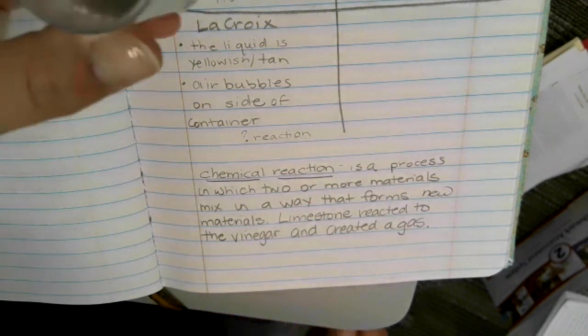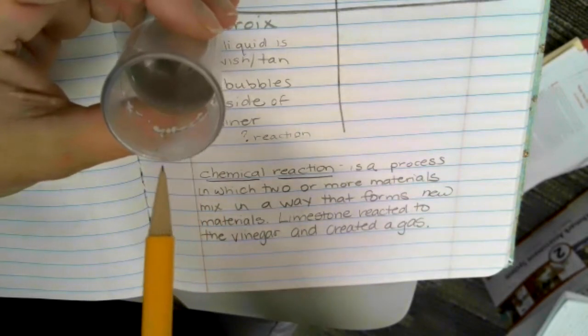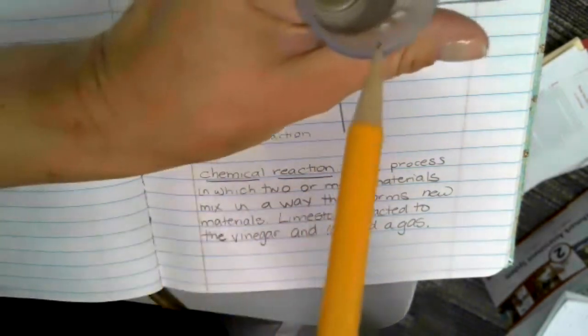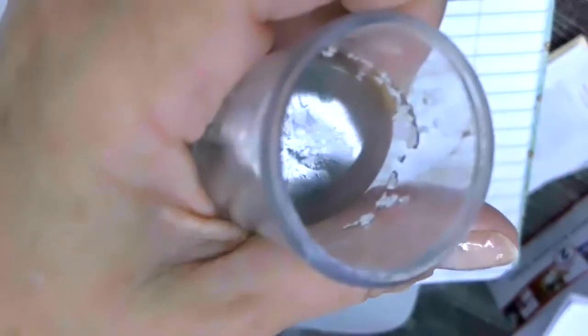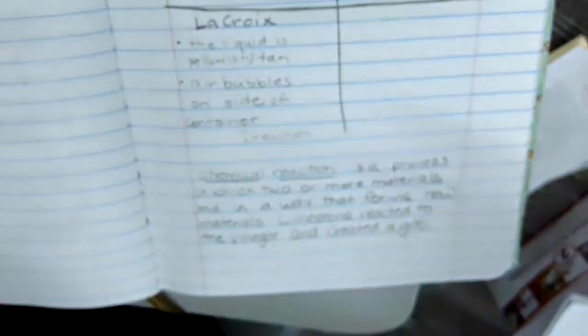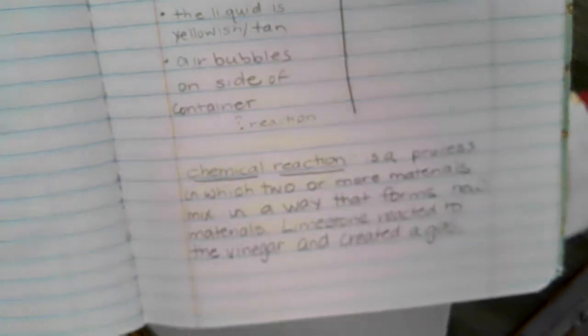The limestone also reacted to the vinegar and formed these white crystals that you see in the vial. None of the others did that. So make sure to include this in your notes. The chemical reaction is a process in which two or more materials mix in a way that forms new materials.